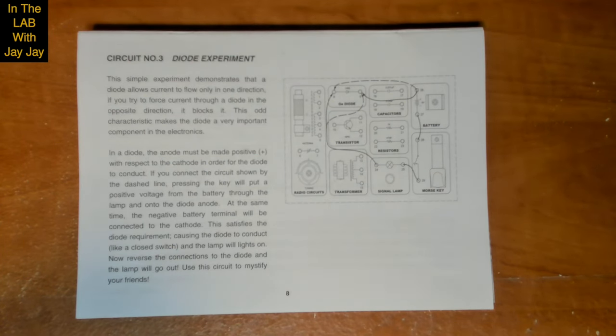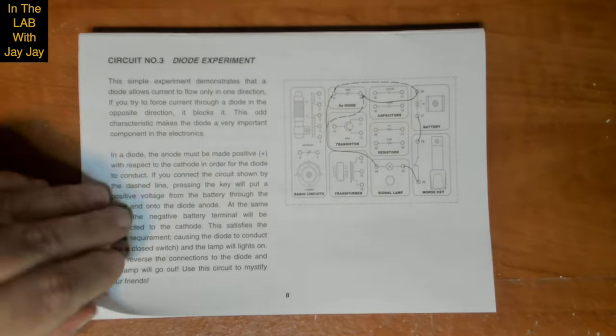At the same time, the negative battery terminal will be connected to the cathode. This satisfies the diode requirement causing the diode to conduct like a closed switch and the lamp will light on. Now reverse the connections to the diode and the lamp will go out. Use this circuit to mystify your friends.